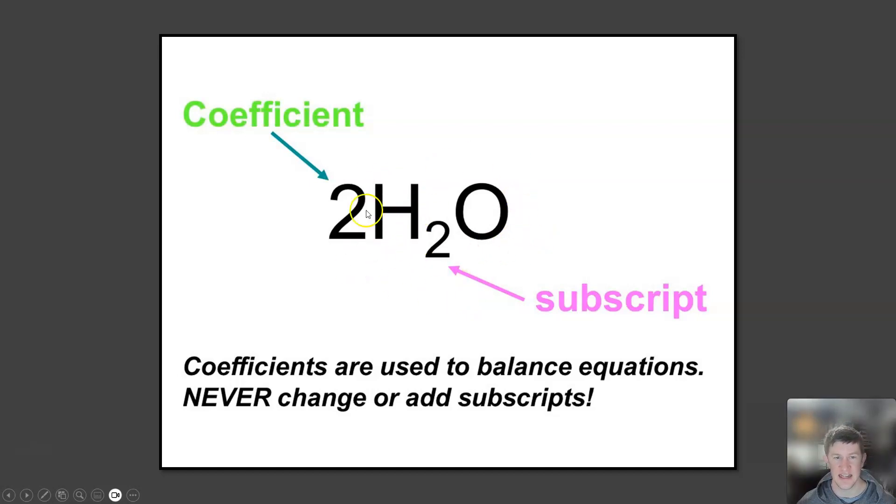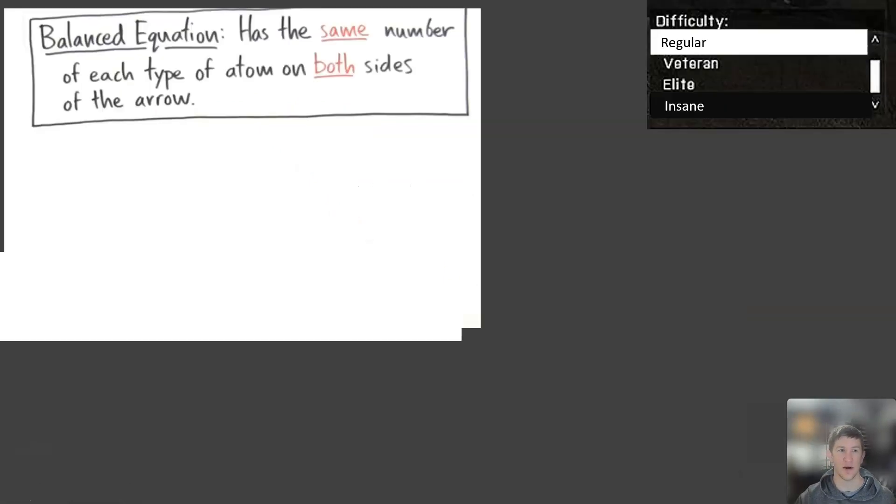So we use these coefficients and we can actually change these. So just like when you think about common factors, we can multiply both sides by the same number. That's okay. But we can never change the subscripts because if I change this and just go, let's just make this H3O, that's a very different compound. And in fact, that's not even possible. So it's really important that we don't change the subscripts. We can only ever add or change coefficients in front of it.